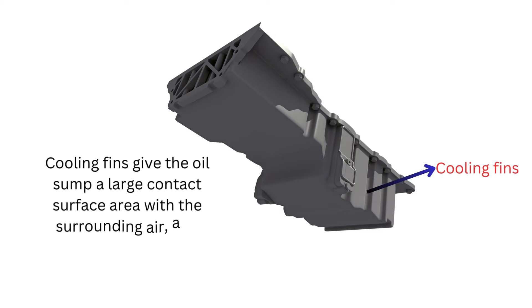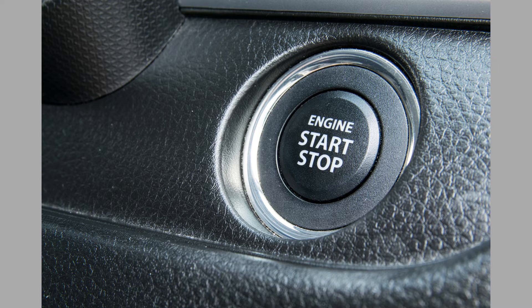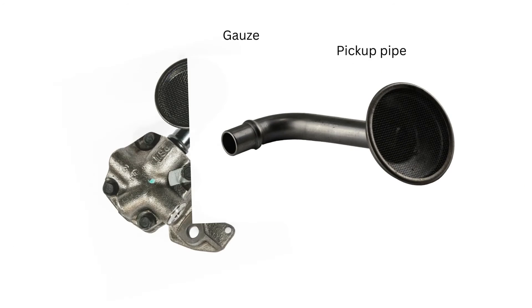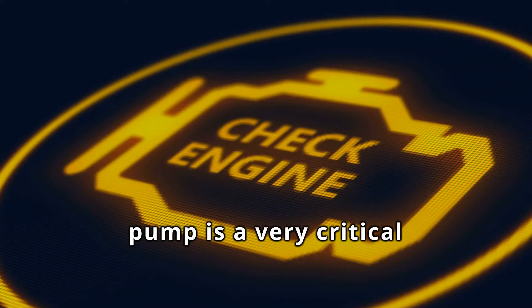The oil sump also has cooling fins that give it a large contact surface area with the surrounding air, making heat transfer much more efficient. Immediately the engine starts working, the oil pump begins to suck the oil from the oil sump through the strainer. The strainer, also called the pickup pipe, has a nozzle that sits below the surface of the oil and is covered by a gauze filter, which prevents large particles from being sucked up into the pump. The oil pump ensures the oil gets to the necessary components at the appropriate pressure, and its failure can lead to a very expensive engine failure.